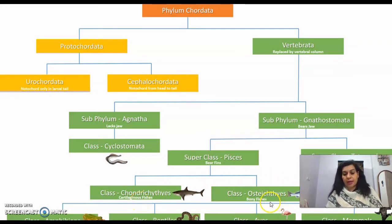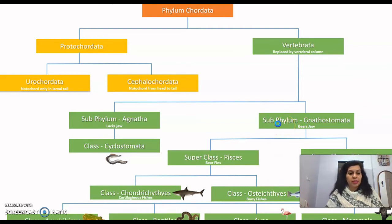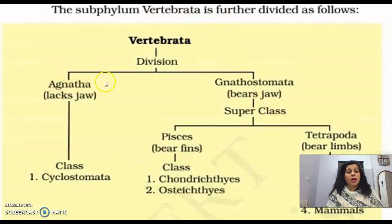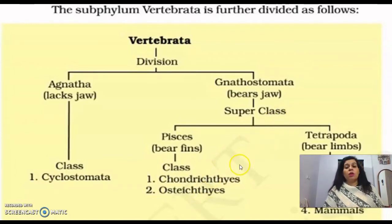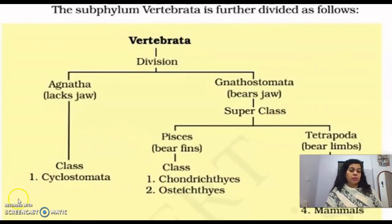Under Gnathostomata, we have Pisces (the fish) and Tetrapoda. Pisces includes Chondrichthyes, which are cartilaginous fish, and Osteichthyes, which are bony fish. Tetrapoda have four limbs and includes four classes: Amphibia, Reptilia, Aves, and Mammalia. The classes under Gnathostomata that bear fins are Chondrichthyes and Osteichthyes, while those bearing limbs are the four tetrapod classes.